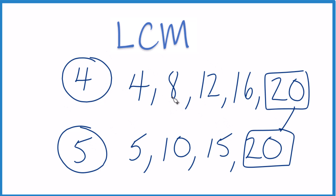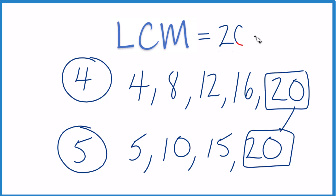When you're finding the multiples, you could also think of it as 1 times 4 equals 4, 2 times 4 equals 8, 3 times 4 equals 12 — or you can just add them up like I did. Either way, the LCM of 4 and 5 is 20. You could use other methods to do this and they'd give you the same answer.